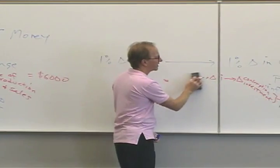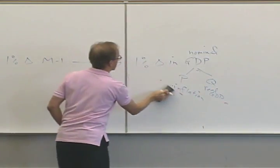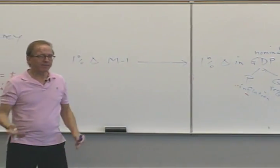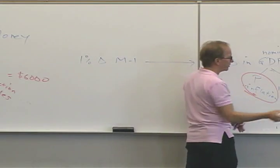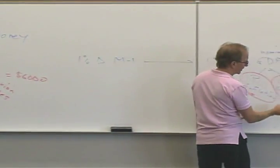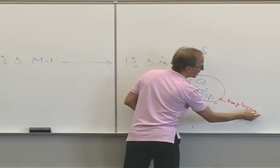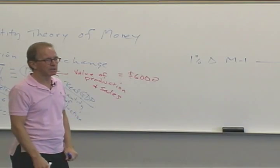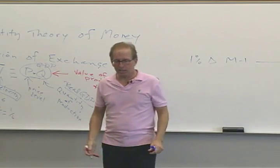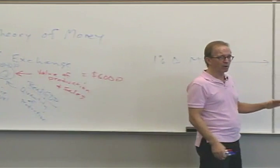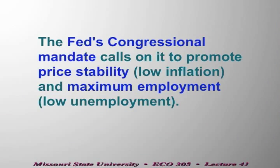If a change in the money supply is reflected proportionally in GDP, how much shows up as inflation or a change in the price level, and how much shows up as a change in real economic activity and employment? If we produce more goods and services we need more workers, lowering the unemployment rate. The Federal Reserve has mandates from Congress to promote price stability, economic growth, and maximum employment.